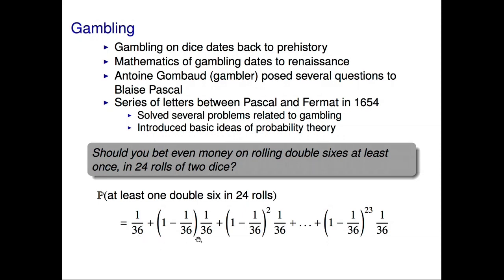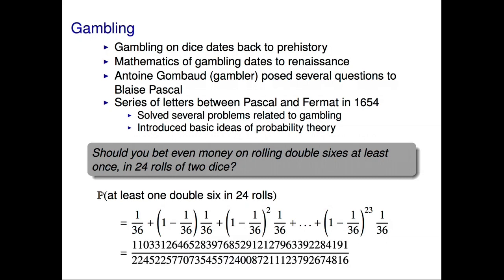Or you could roll something else on the first attempt, which happens with probability 1 minus 1/36, and then roll double sixes on your second attempt. Or you could roll something else on the first two attempts and then roll double sixes on the third, etc. Or roll something else on the first 23 attempts but then get very lucky on your last attempt. If you simplify this, we find that the probability of success is less than a half, and so betting even money is a bad idea in this case.